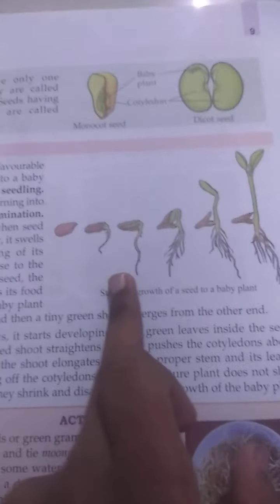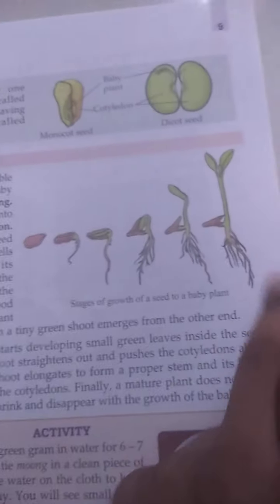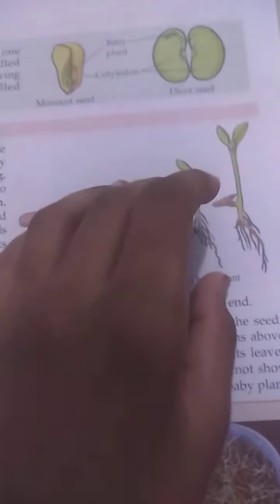The whole process of a seed turning into a seedling is called germination. In the next step, I will show you an activity on how a seed grows — it is a very easy activity.